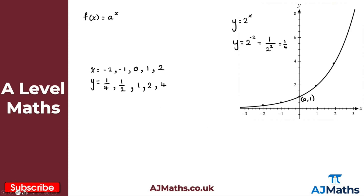I'll draw the asymptote in a different pen colour to make it clear — we have an asymptote with the x-axis. The reason is that our curve never actually intersects with the x-axis. In the negative values, it keeps going but would never touch the x-axis. So we have an asymptote at y = 0, or in other words, the x-axis.